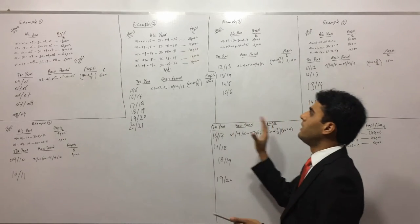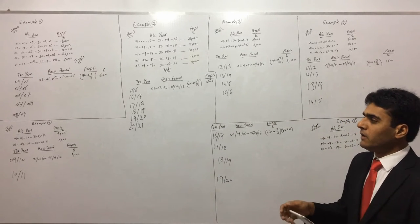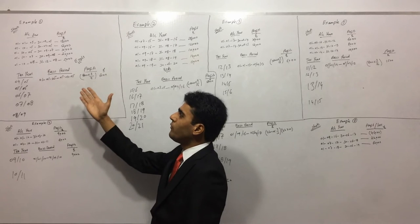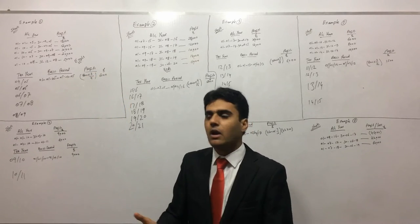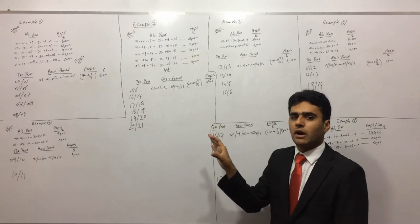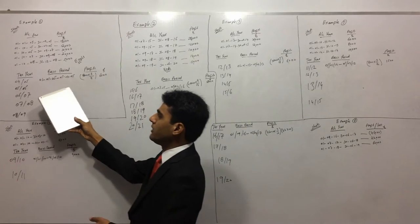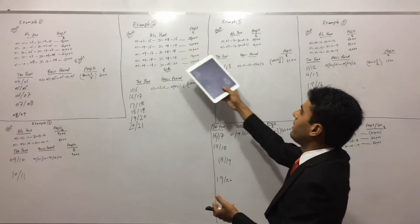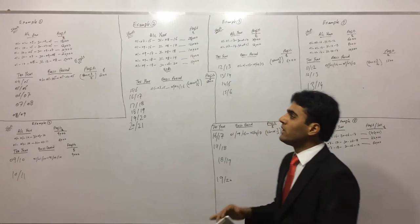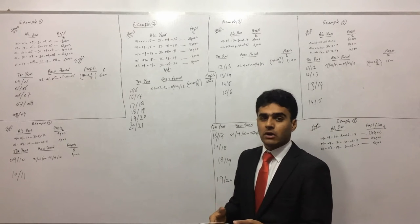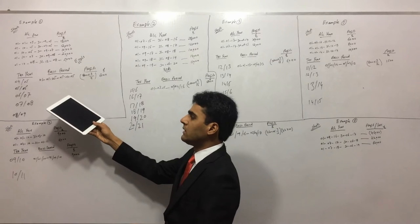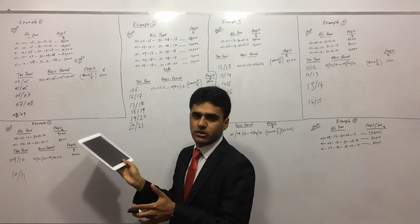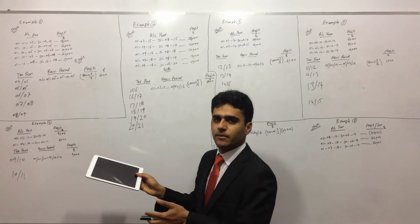The second basis period is different in each case. Why is it different? The second basis period will depend on how long your accounting period is — but which accounting period? The first accounting period, because we haven't moved out of the first accounting period yet. Although we have done our first basis period, we are still on the first accounting period. We will look at the length of the first accounting period and according to that, we will determine our second basis period.